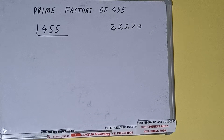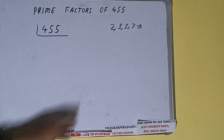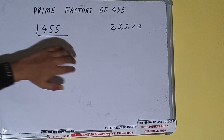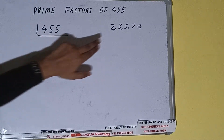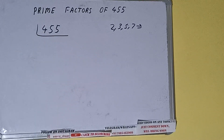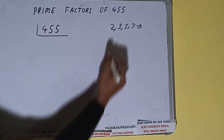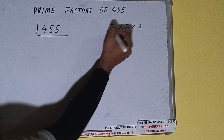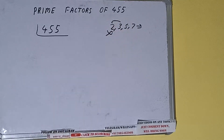We'll be checking with the lowest prime number, which is 2. Is the number 455 divisible by 2? Clearly not, because the number is odd. So we'll be checking with the next lowest prime number, that is 3.